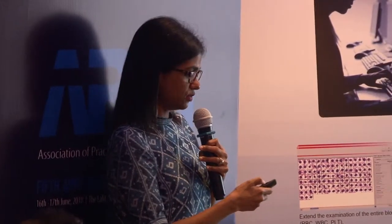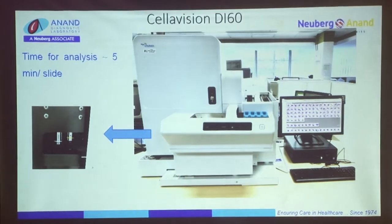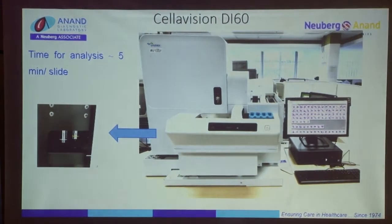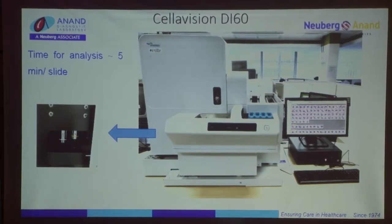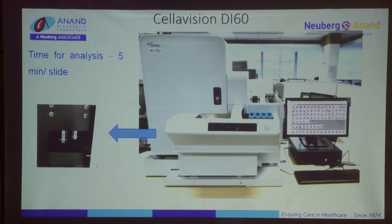This is the CellaVision that we have in our lab — you can see the hardware here. We send slides through this rack once they are stained. These are automated smears where smearing and staining happen through automation connected to a blood cell counter. We push the smears in, and in about five minutes we get results on the computer. Inside this casing there is a microscope and a camera; the microscope moves in a pattern and clicks many images, which are then analyzed by the already-trained software.